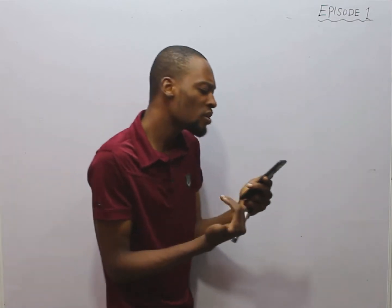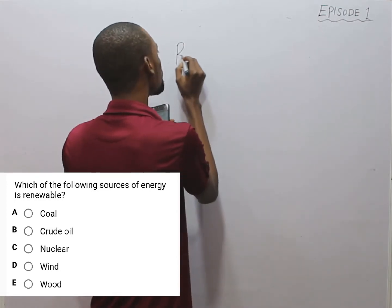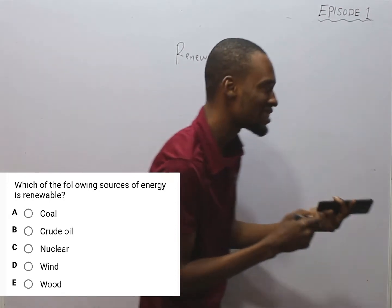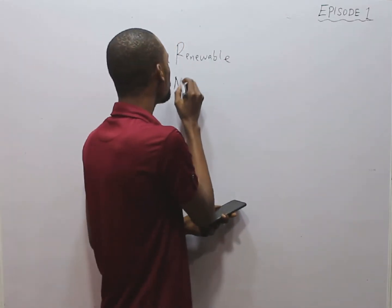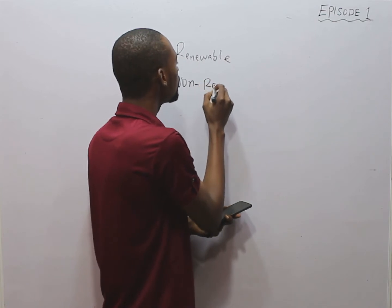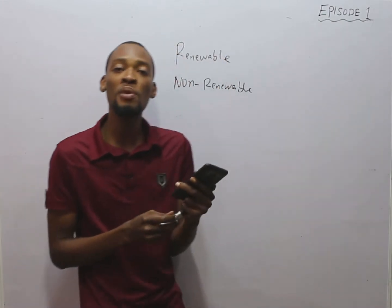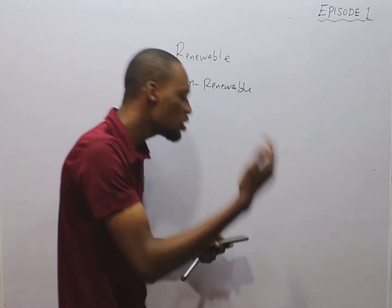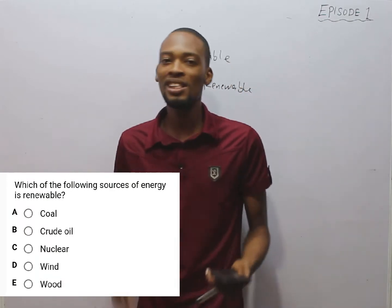The first question is: which of the following sources of energy is renewable? Remember, energy is the ability or capacity to do work. Energy can be renewable or non-renewable. Renewable sources of energy are sources that don't get finished — they continue over time and replenish.